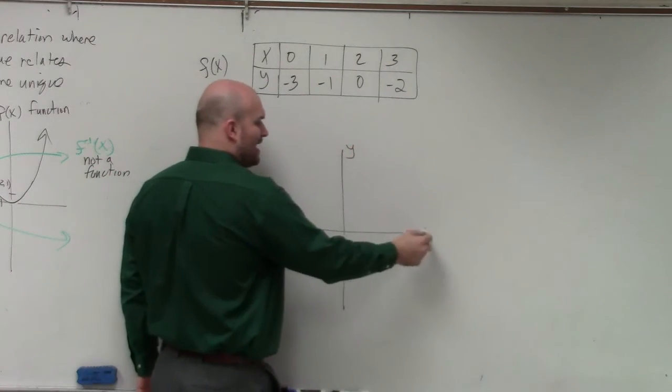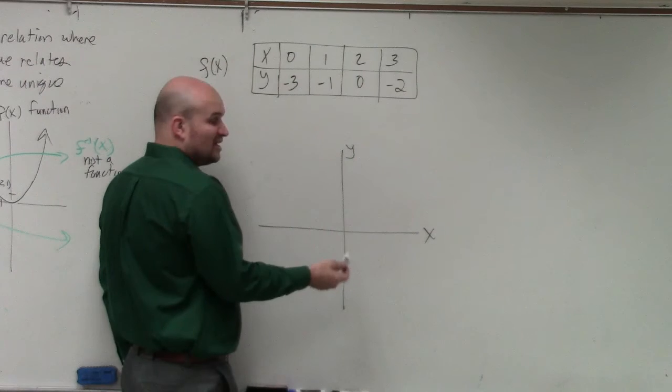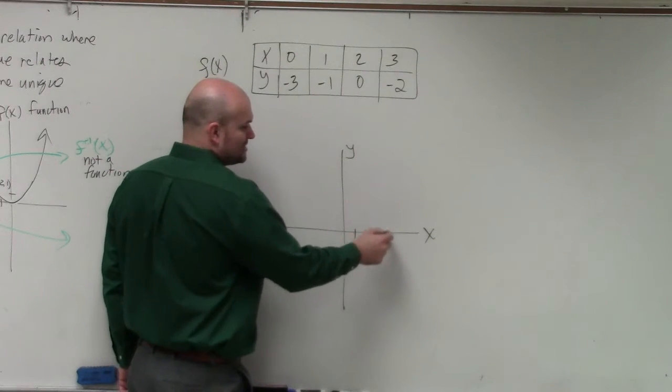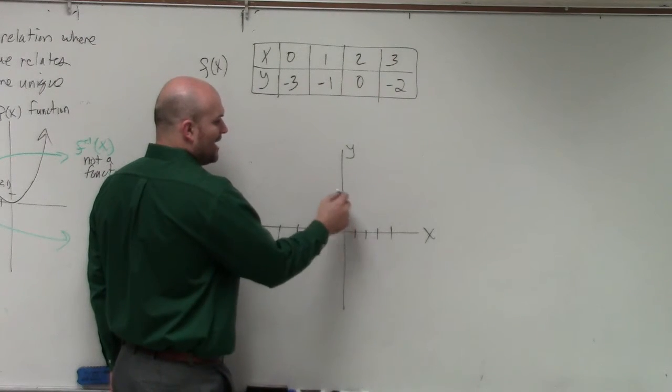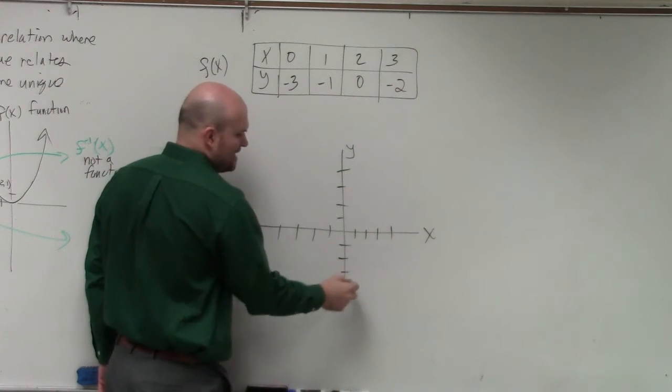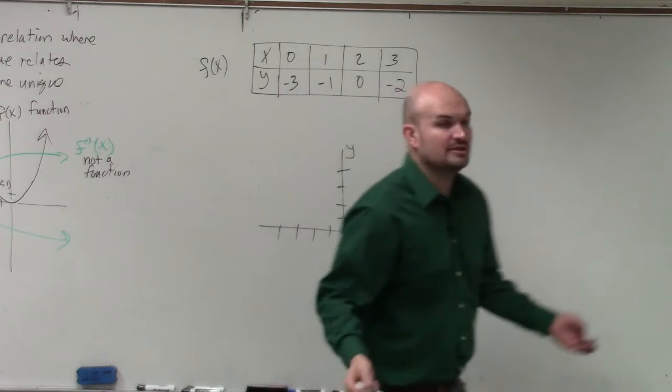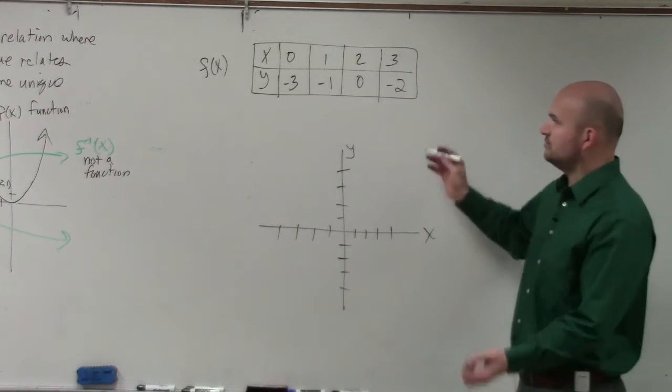Because when you first learn how to graph, you had a y-axis and an x-axis. And really, all the y and the x-axis are number lines. X number line going to the right is positive. To the left is negative. Y going up is positive. Y going down is negative, right? So let's all just go ahead and start plotting the points.